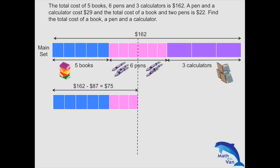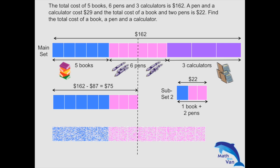Now I'm going to use information from subset two. Looking at the numbers, I'll make the number of books the same, meaning I need 5 groups of subset two. This gives 5 books plus 10 pens, costing $110.